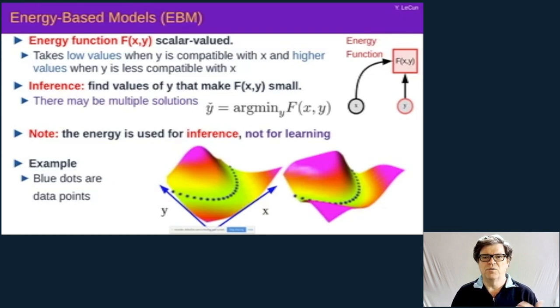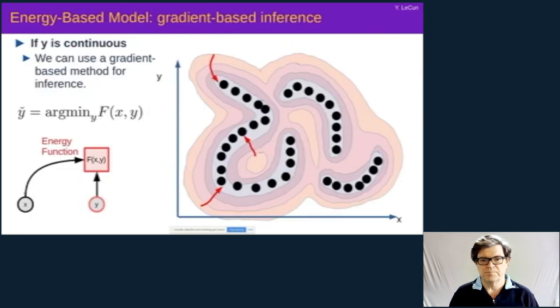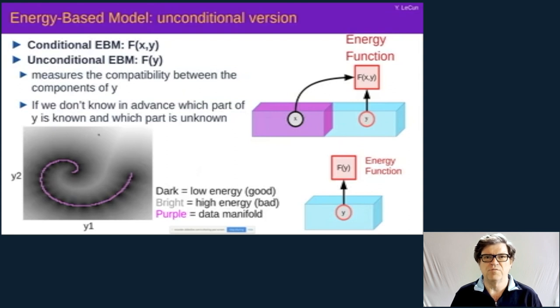Again, that takes low value if x and y are compatible and higher value if they're not. Inference is performed by, for a given x, finding y's that minimize this energy. There could be multiple y's. And this is a way of handling uncertainty without resorting to probabilities. Inference can be done if the function f is smooth in y space. It can be done through gradient-based optimization algorithms or some other inference methods. Of course, if y is discrete, it's much easier, and we don't know how to deal with that.